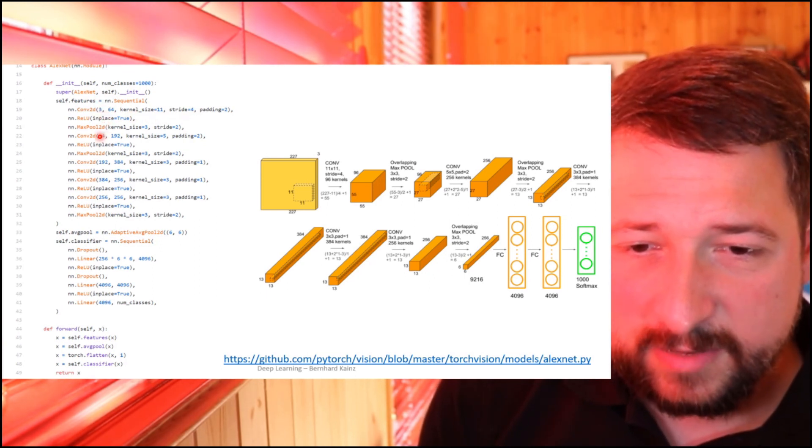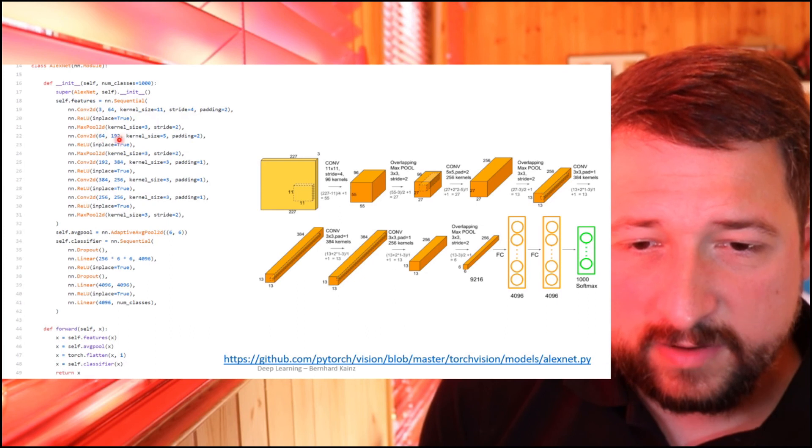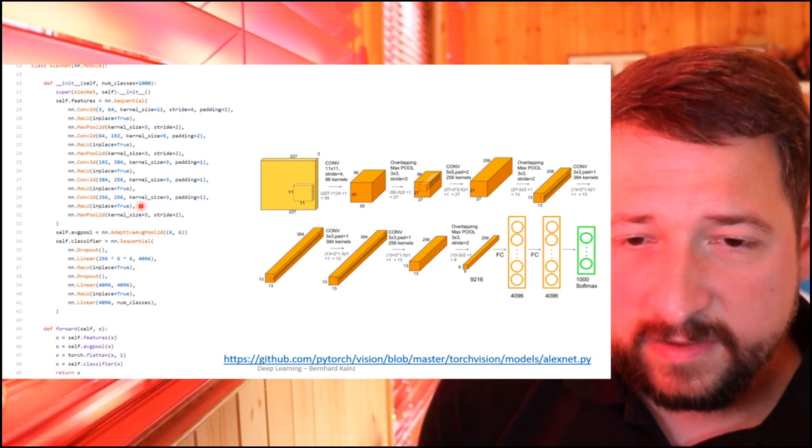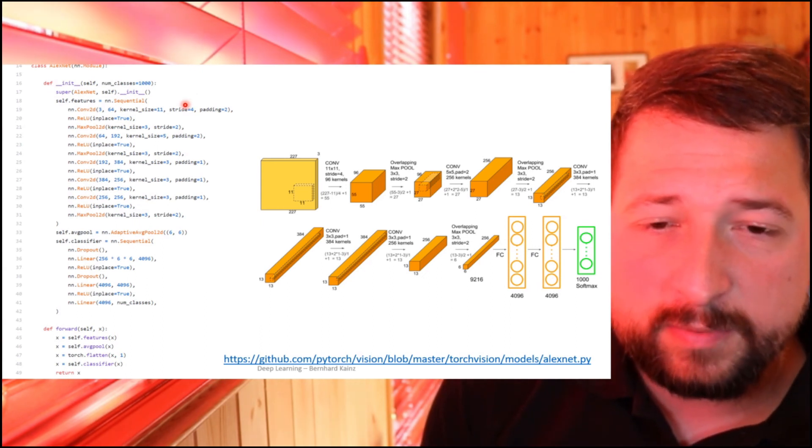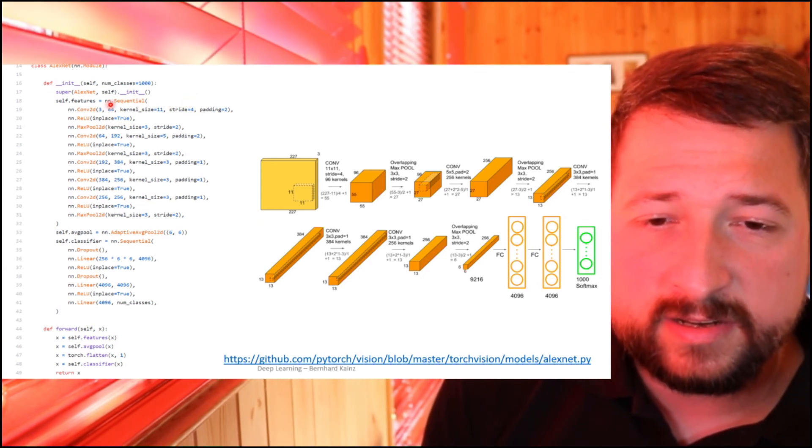And of course, at the time, the use of max pooling. And we have our five layers here. The other thing you can see in this code here is that we can collect network parts or entire networks in nn.Sequential, which then forms a whole network.